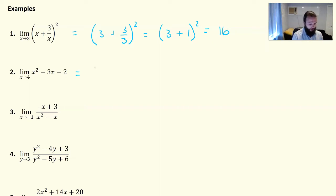Second one as well, just put in 4 squared minus 3 times 4 minus 2, 16 minus 12 minus 2, and all we've got is 2. So first couple, really simple.